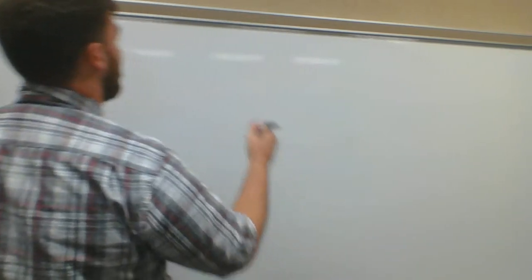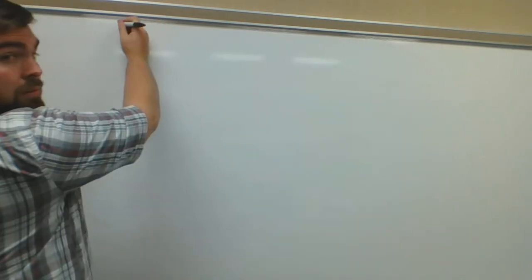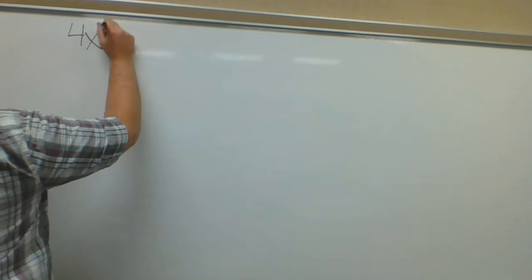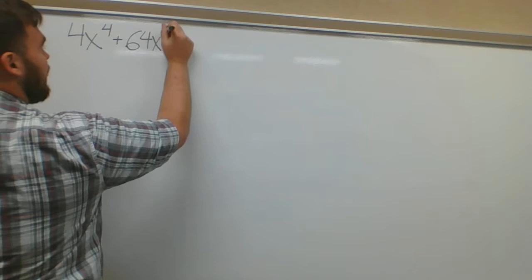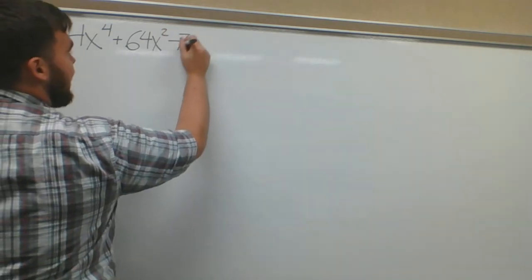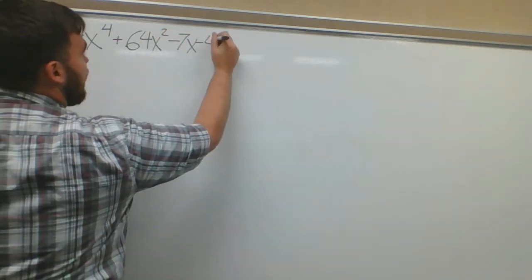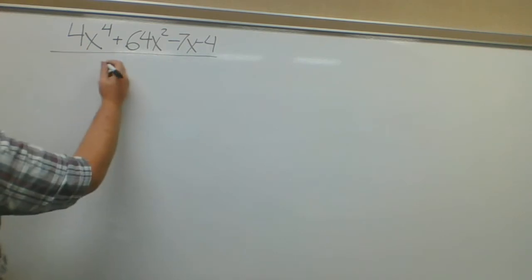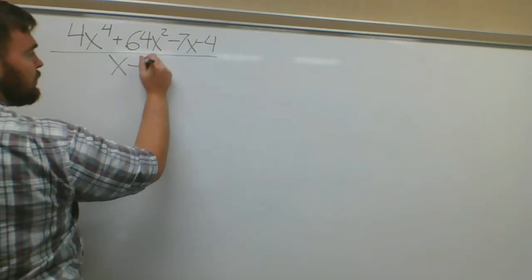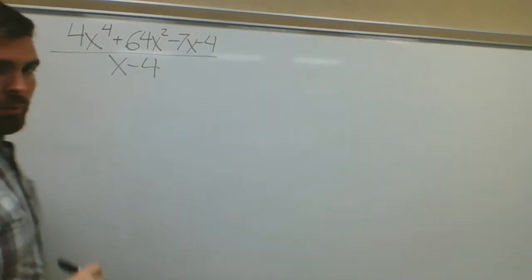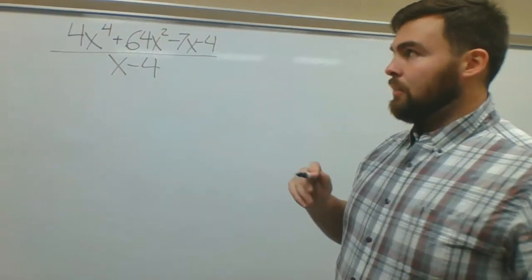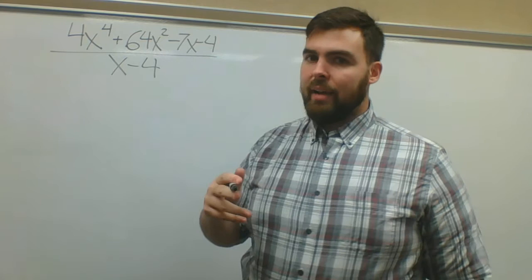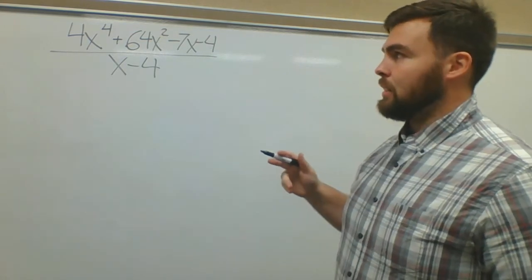Here, let's try this problem now. We got 4x to the fourth plus 64x squared minus 7x minus 4 divided by x minus 4. So try to set up your synthetic division box by yourself and then we'll come back together. Press play after you set up your synthetic division box.